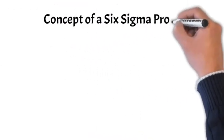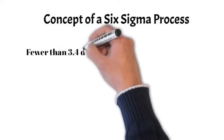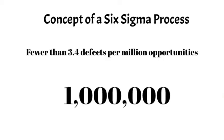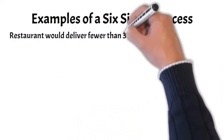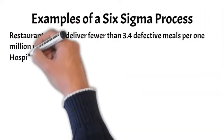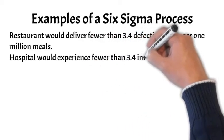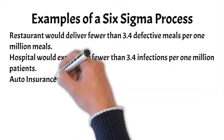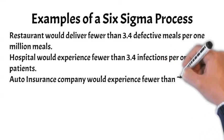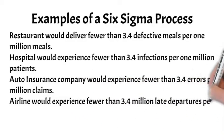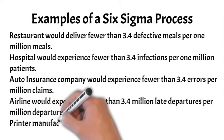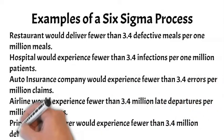When the phrase Six Sigma quality, or Six Sigma process, is used, it expresses a very specific level of quality. A Six Sigma process is one that delivers fewer than 3.4 defects per million opportunities. Here are some examples of how this concept can be applied in practice. A restaurant would deliver fewer than 3.4 defective meals per 1 million meals. A hospital would experience fewer than 3.4 infections per 1 million patients. An auto insurance company would experience fewer than 3.4 errors per million claims. An airline would experience fewer than 3.4 late departures per million departures. A printer manufacturer would experience fewer than 3.4 defective units per 1 million produced.